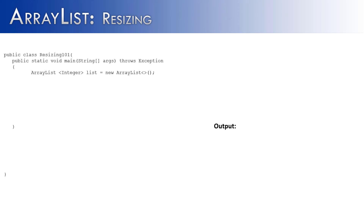In our quest to understand ArrayList, one important stop along the way is resizing. To show resizing, I've created a class called Resizing 101. Notice on the main method there, I have two extra words: ThrowsException. I'm not going to explain ThrowsException in this particular video, but you need to have it. Next, I'm going to import two things: the ArrayList class and something called Reflect, which I'll explain below.